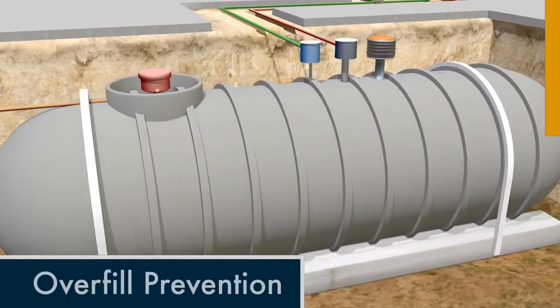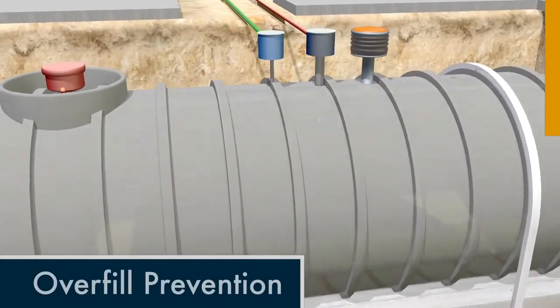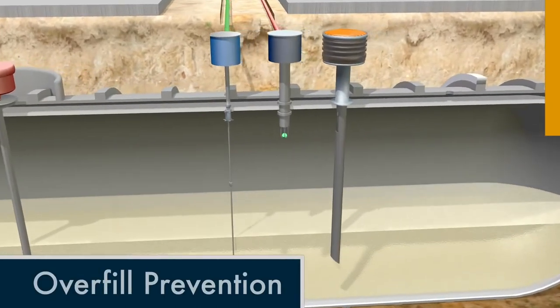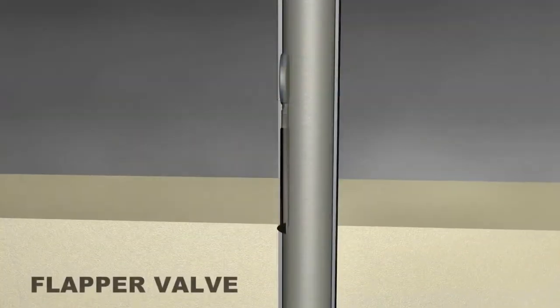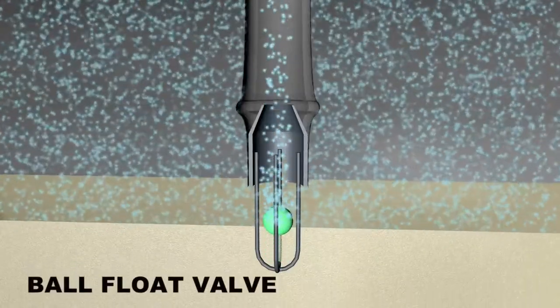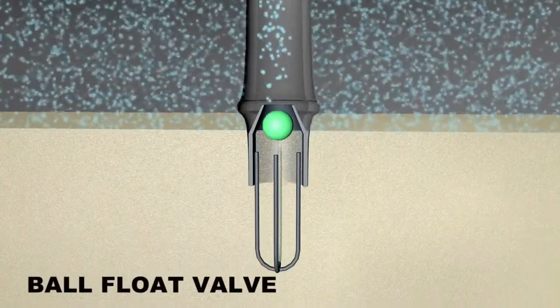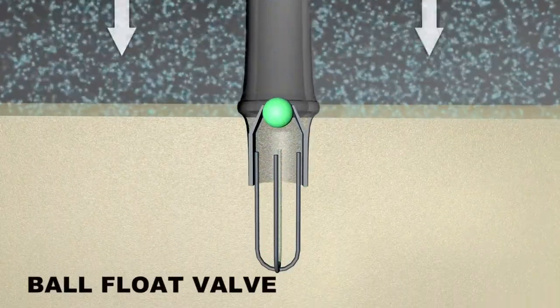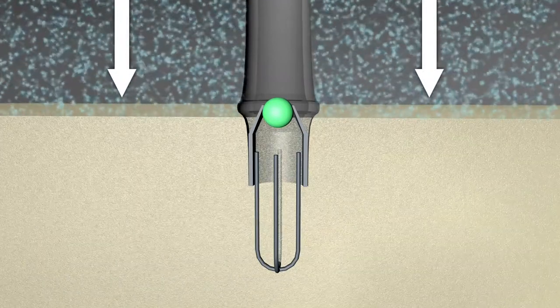As an added measure of safety, today's underground tanks feature a variety of overfill prevention technologies. A flapper valve automatically cuts off the flow of fuel into the tank, while a ball float in the vent pipe prevents vapor from escaping. The pressure of vapor within the tank then prevents additional fuel from entering.